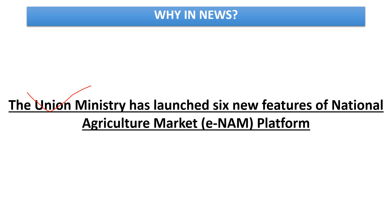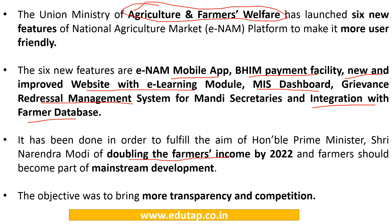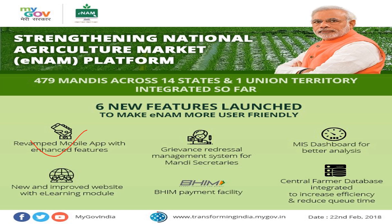Recently, the Union Ministry of Agriculture and Farmers Welfare has launched 6 new features of the National Agriculture Market, i.e., the E-NAM platform. The 6 new features are: E-NAM mobile app, Bheem payment facility, a new and improved website with an e-learning module, MIS dashboard, grievance redressal management system for Mandi sector, and integration with farmer database. These have been launched with the aim of doubling farmers' income by 2022 and to bring more transparency.